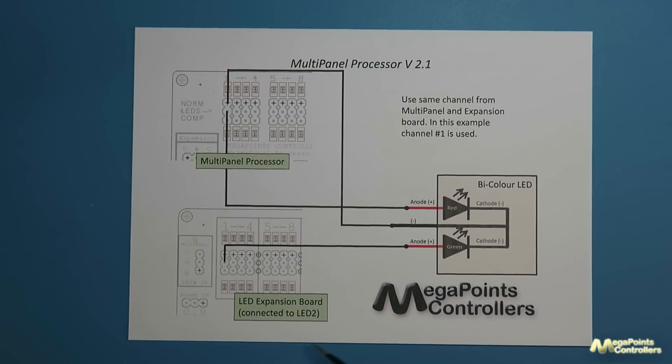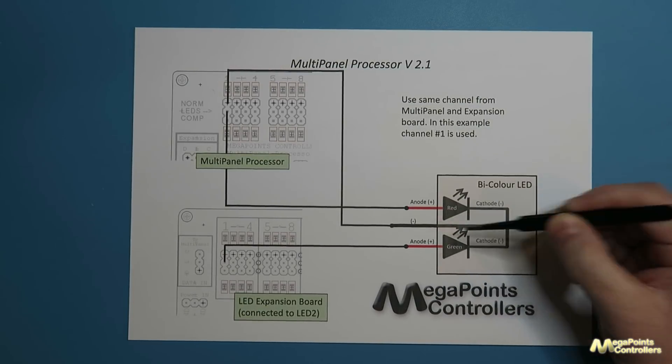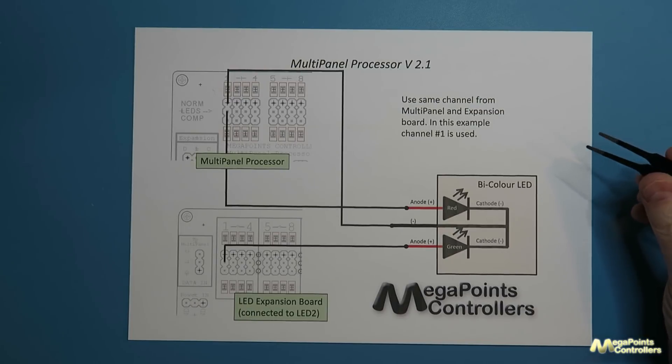It involved hooking up an LED expansion board via the LED 2 socket and in the example I gave I showed these three-legged bi-color LEDs as a method of hooking up and getting different colors.